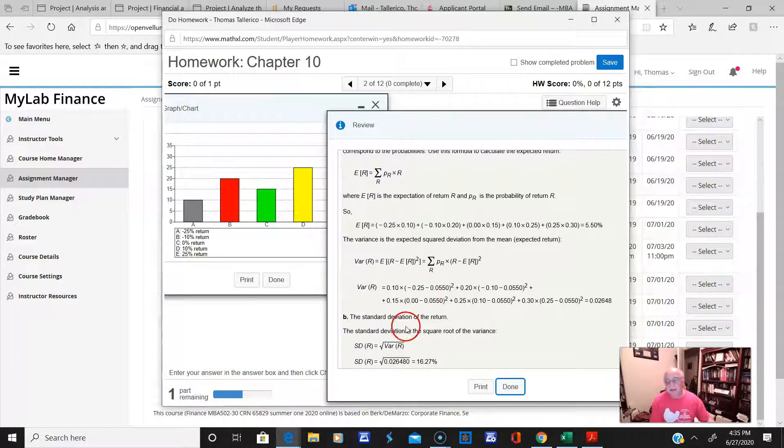All right, anyway, and then the standard deviation is just the square root of that number, right? So I would just take the square root of 0.02648 on a calculator, or again, in Microsoft Excel, and you should get 16.27%, okay? And again, if the math is correct and if you use the SQRT function on 0.02648, you should get this number.